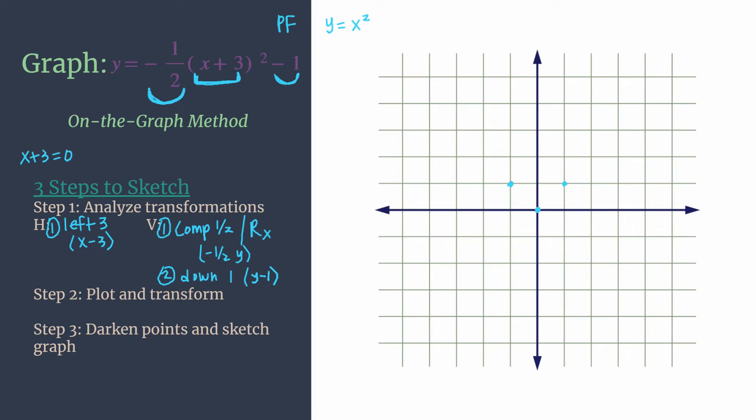All right, so we'll do our first transformation in yellow. And let's start with the horizontal left three. So just take each of your points, move them left three, and mark that spot with a small x or a light x. This is our first intermediate graph. So simple enough. We've moved left three. Let's switch colors. Let's switch to green.